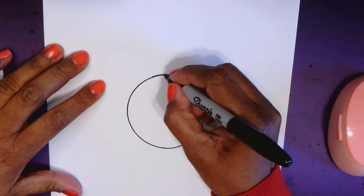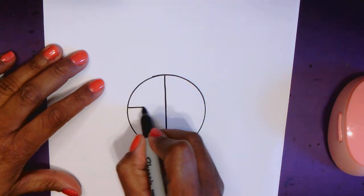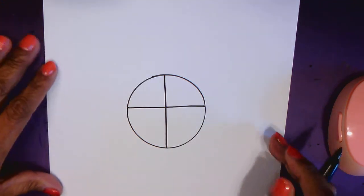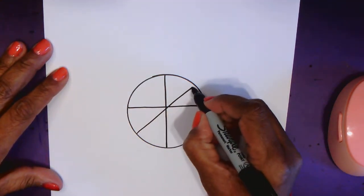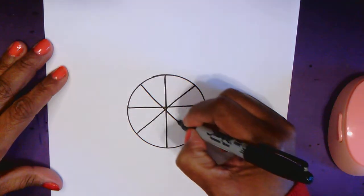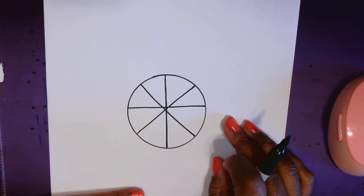So let's start by just drawing a line down the middle and through the center. Make a cross and then let's add an X. It doesn't have to be perfect. So this is where our mandala will start.